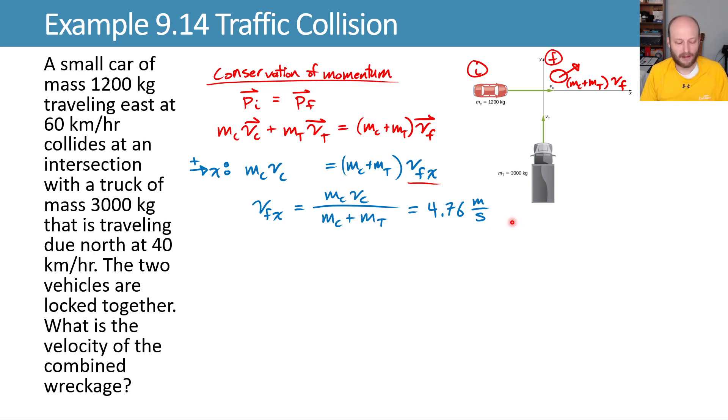And we can do the same thing in the y, where we get only the truck is moving in the y. And then finally, we have their combined mass that's moving with some unknown final velocity in the y. We'll solve for this by dividing both sides by the combination of mc and mt as before. Plug in values and get 7.93 meters per second.